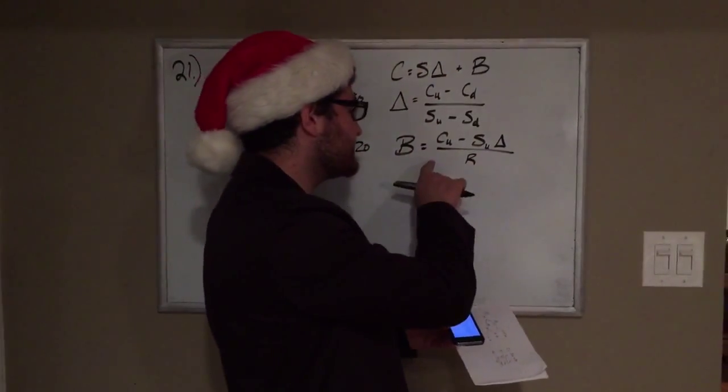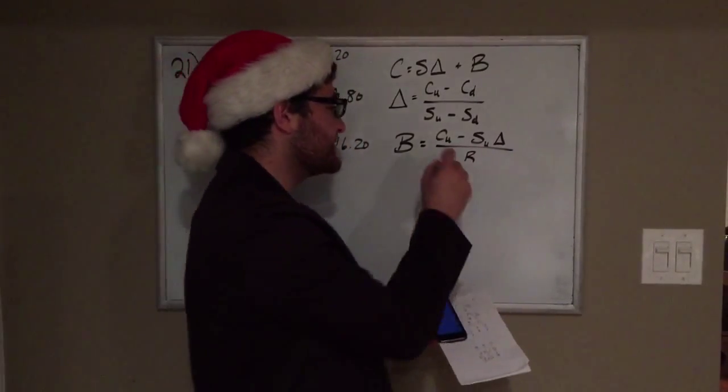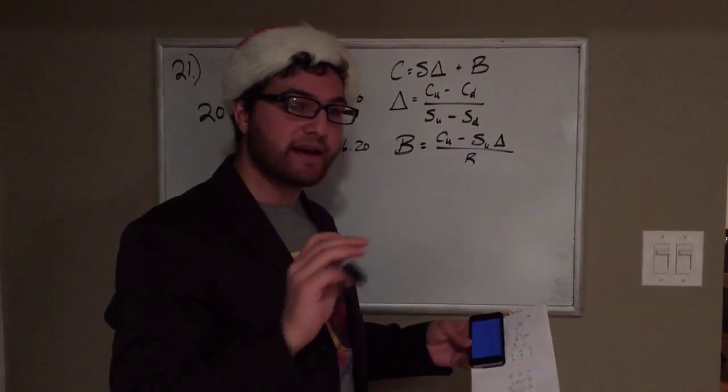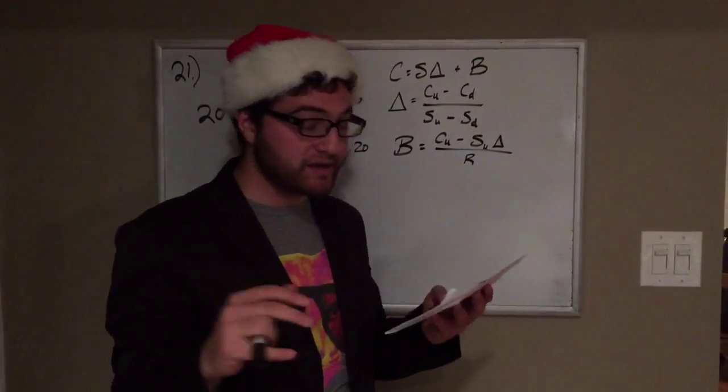In this case I use the price of the call going up and the price of the stock going up. You can use price of the call going down and price of the stock going down, but you have to make sure it's consistent. Either use up and up or down and down, but if you mismatch them you're going to get wrong numbers.